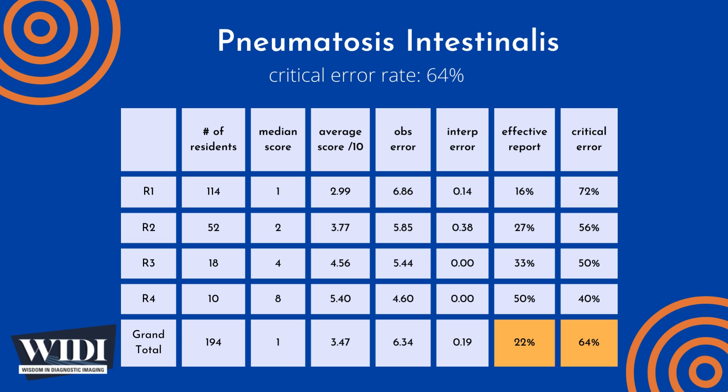We define a report having a critical error to be one with scores of 0 to 2 — in terms of letter grades, this would be an F or a D. In this most missed case, 64% of residents produced reports with critical errors.